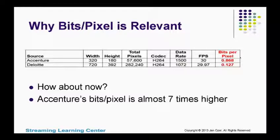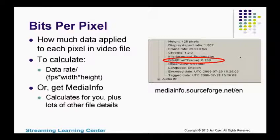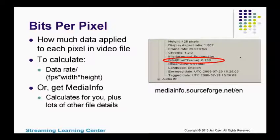Comparing those two streams on a bits per pixel basis, Accenture is about seven times higher than Deloitte. Do they need all that data? Not if the Deloitte video looks good. The formula for bits per pixel — and I've got tons of spreadsheets to calculate this automatically — is your per-second data rate divided by the number of pixels per second of video, which is frames per second times width times height. Or you can get a free program called MediaInfo, available on Mac, Windows, and Unix, that will give you the bits per pixel of every encoded file. Not only does it tell you bits per pixel, it tells you a lot of other information about the file.